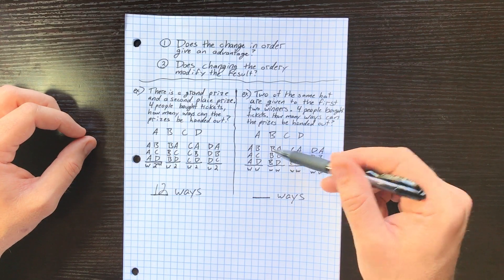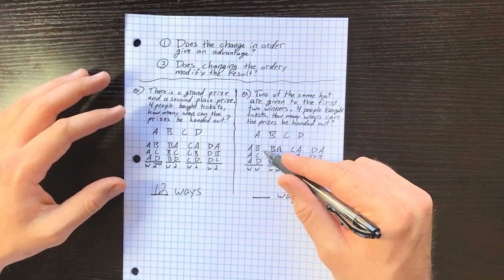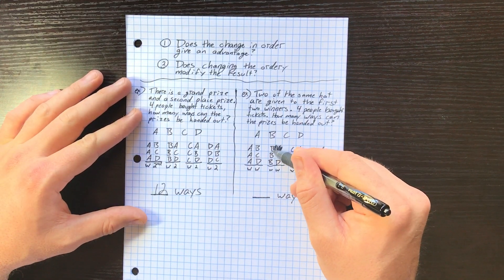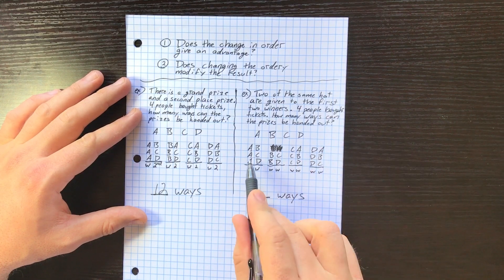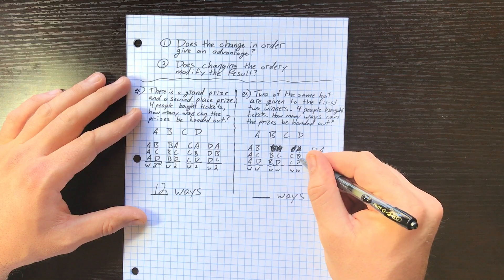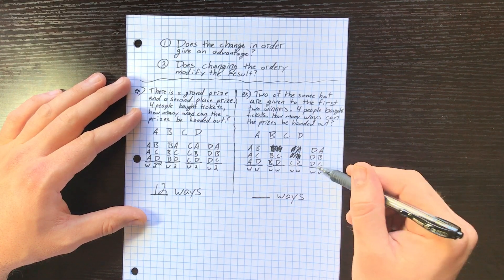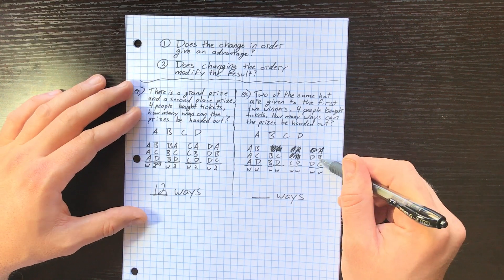Well, no, because in this result and in this result, B and A both get a hat. So this is actually the same result and we can't count it. Same thing if C and A - well, we already have that combination. C and B, we already have that combination. And D - well, we already have DA, DB, and DC.